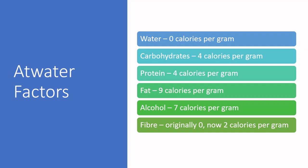Atwater's experimental work determined what each proximate analysis component contributes to the energetic properties of food. Water contributes zero calories. Carbohydrates contribute 4 calories per gram. Protein contributes 4 calories per gram. Fat contributes 9 calories per gram. Alcohol (ethanol) contributes 7 calories per gram. Fiber originally contributed zero calories, but is now considered to contribute 2 calories per gram.